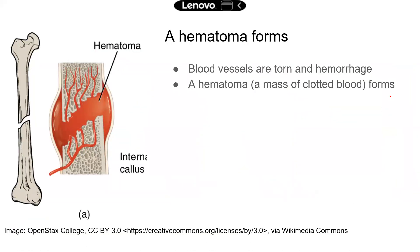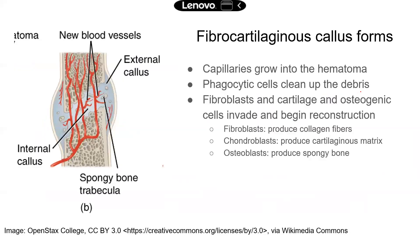When the fracture happens, we know that there are blood vessels going through bones, so those blood vessels will be torn and the bone will hemorrhage. A hematoma will start to form — the hematoma is really just a mass of clotted blood. So that's the first step, and the second step is where the repair really begins.